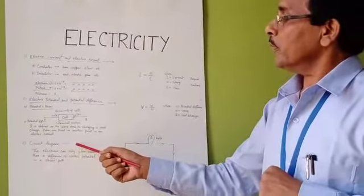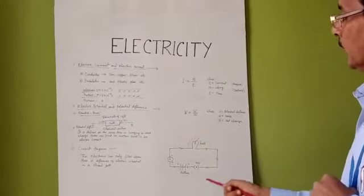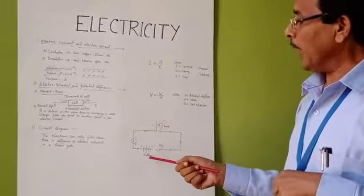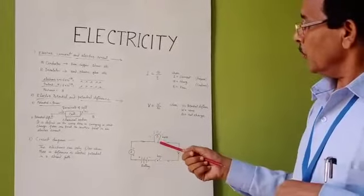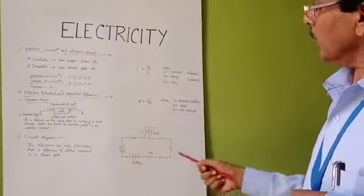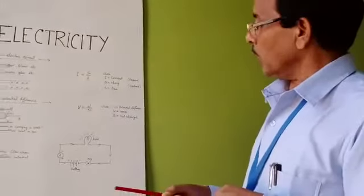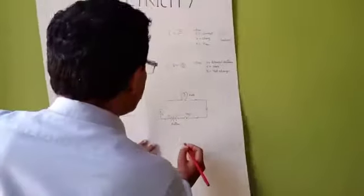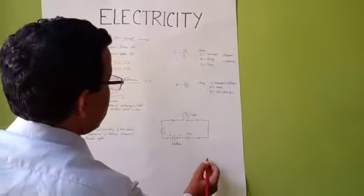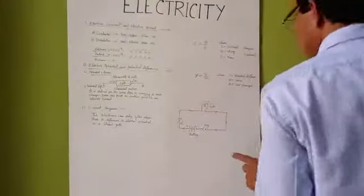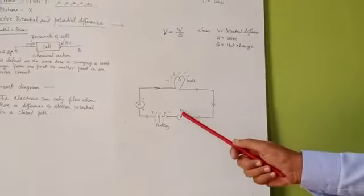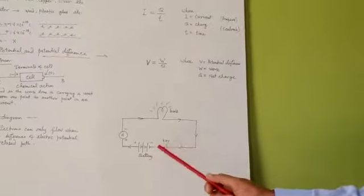Now, the circuit diagram. In this circuit you can see the components: a bulb, a key, a battery, and a wire with an arrow mark showing current direction. When the key is closed, the circuit is complete. When the key is open, the circuit is broken. You can see both types of key — closed and open — in the diagram.